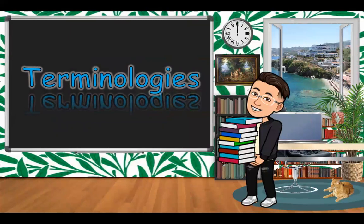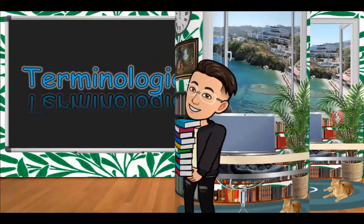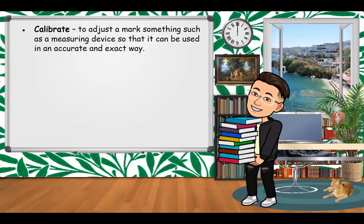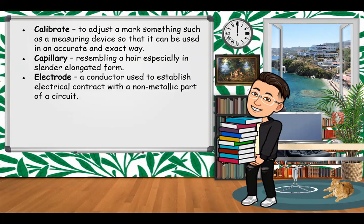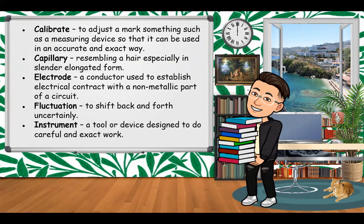During the discussion you will also encounter different terminologies. Calibrate means to adjust and mark something such as a measuring device so that it can be used in an accurate and exact way. Capillary means resembling a hair, especially in slender elongated form. Electrode is a conductor used to establish electrical contact with a non-metallic part of a circuit. Fluctuation means to shift back and forth uncertainly. Instrument is a tool or device designed to do careful and exact work.